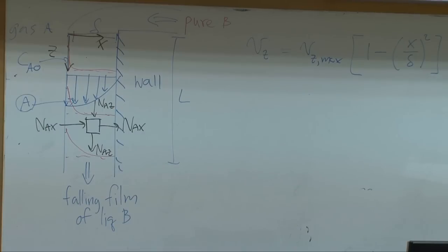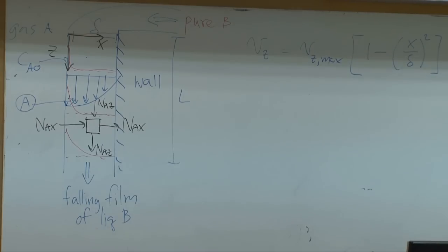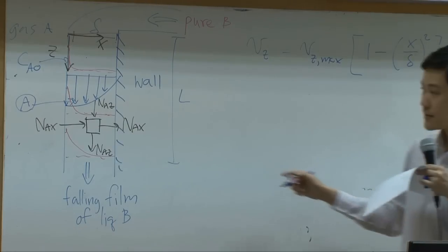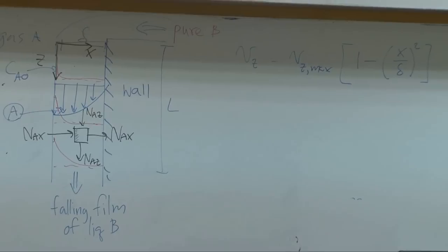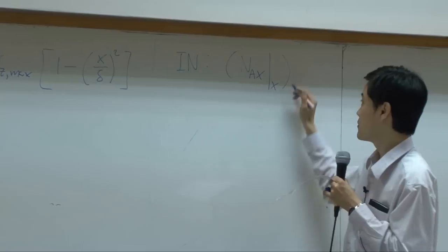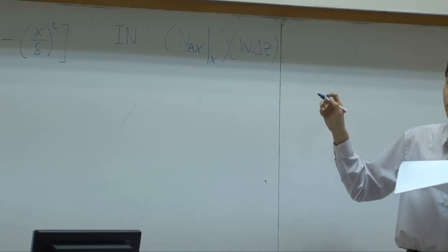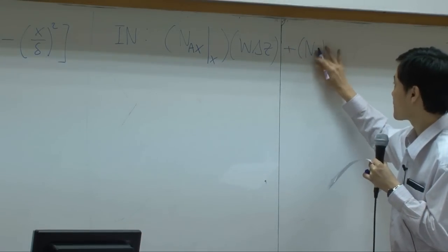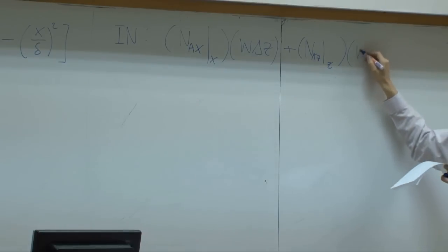In order to avoid confusion, let's look into each term. Input means you have flux in the x direction and in the z direction. For the x direction it's NAx at x, multiplied by the area perpendicular to it. NAx is multiplied by this area. The area here — suppose the width of the wall is w — the area will be w·Δz. You will also have flux in the z direction: NAz multiplied by the area perpendicular to the flux in the z direction, which is w·Δx.